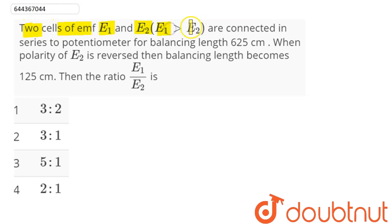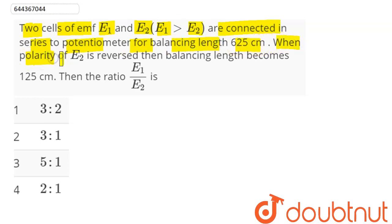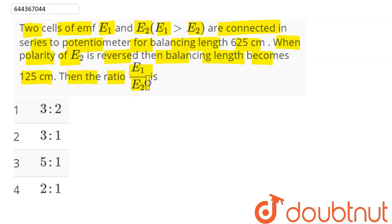The question is: two cells of EMF e1 and e2, where e1 is greater than e2, are connected in series to a potentiometer. The balancing length is 625 centimeters. When the polarity of e2 is reversed, the balancing length becomes 125 centimeters. Find the ratio e1 to e2.